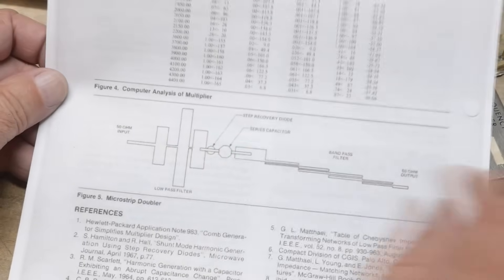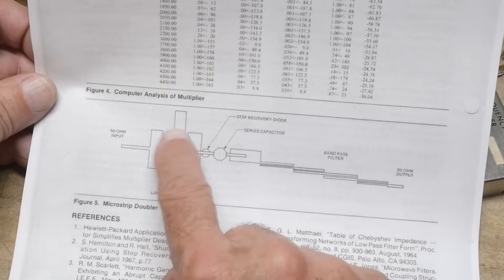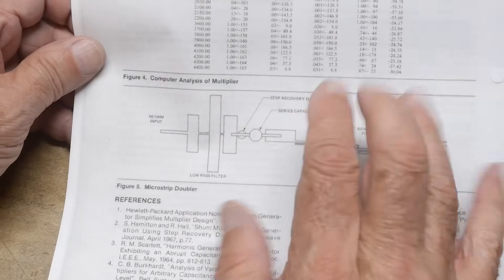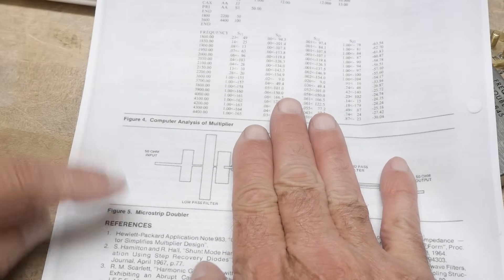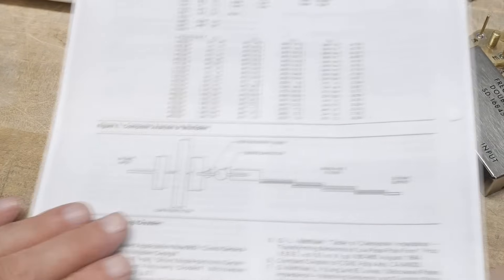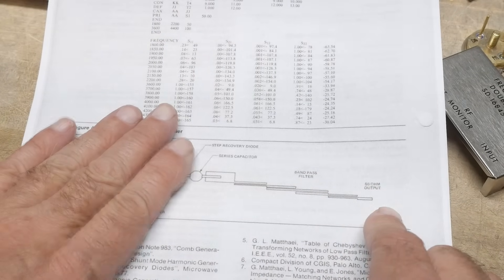So this is the input, this is the output. This is the section in the front, those lines there, and that is a low pass filter. And then these lines over here is a band pass filter.